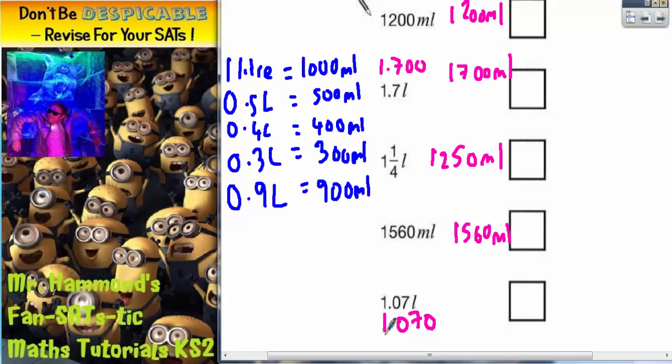So the 1 before the point is 1,000 millilitres. And the point zero, seven, zero is 70 millilitres. So it's going to be 1,070 millilitres.